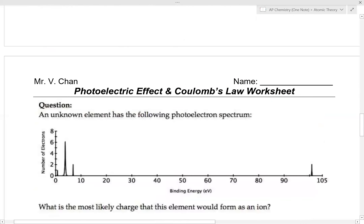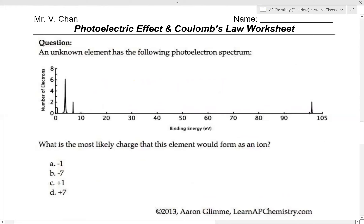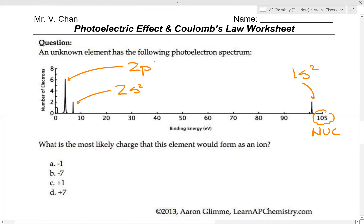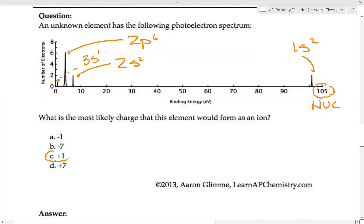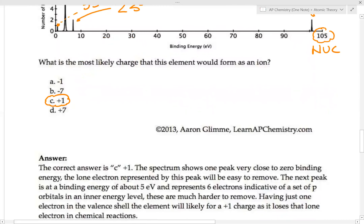Another example asks: what is the most likely charge this element would form as an ion? With a large binding energy on the right (the nucleus side), the configuration reads 1s2, 2s2, 2p6, 3s1. Because there is one valence electron in the outermost shell, the most likely charge is +1, so the answer is C.